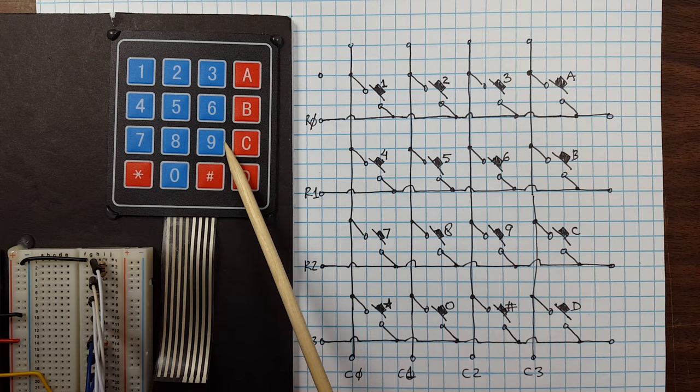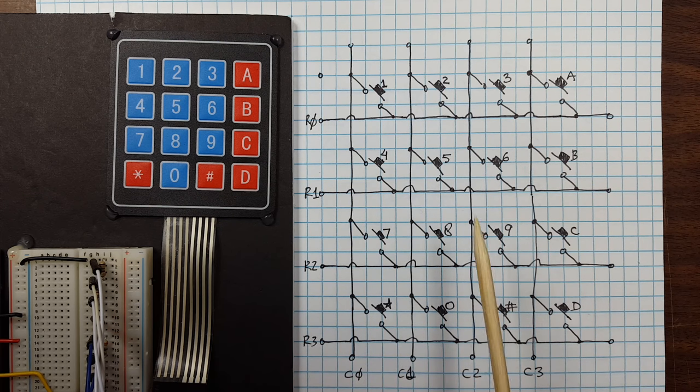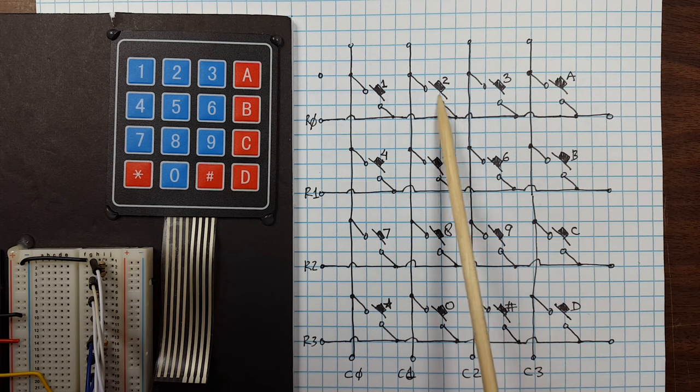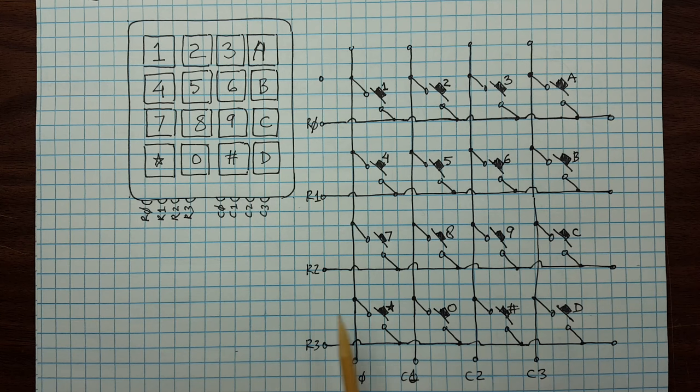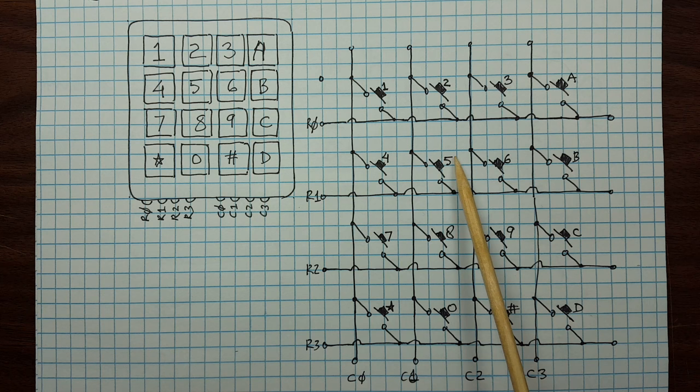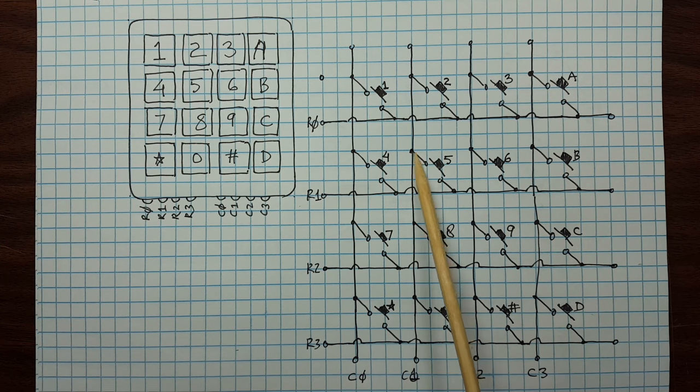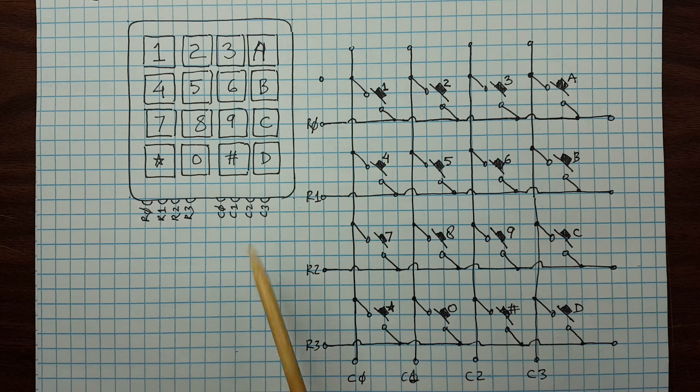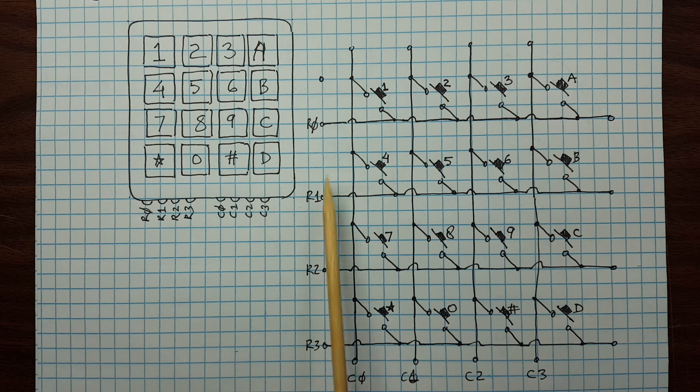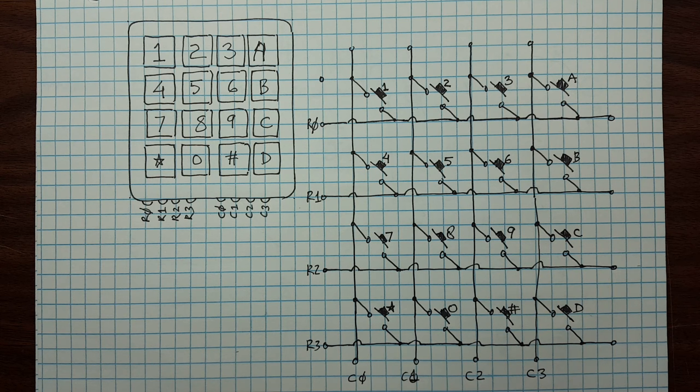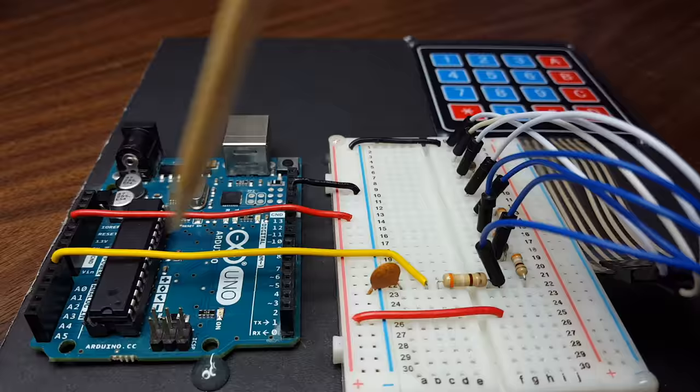A keypad is actually laid out similar to an LED matrix. However, instead of LEDs at each intersection of rows and columns, we have switches. Pressing one of these switches would connect one row to one column. Let's say we press this button here. So that would connect this row to that column. So to read a 4x4 keypad we would need four rows and four columns. That's eight Arduino pins. But as you saw we're only using one Arduino pin.